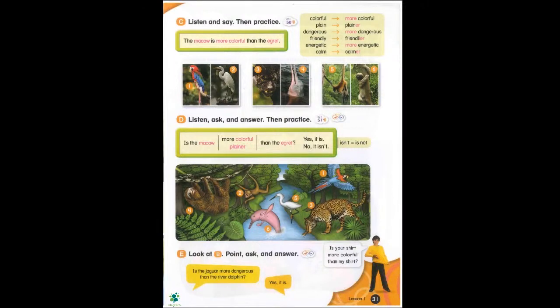One: The macaw is more colorful than the egret. Two: The egret is plainer than the macaw. Three: The jaguar is more dangerous than the river dolphin. Four: The river dolphin is friendlier than the jaguar. Five: The spider monkey is more energetic than the sloth. Six: The sloth is calmer than the spider monkey.